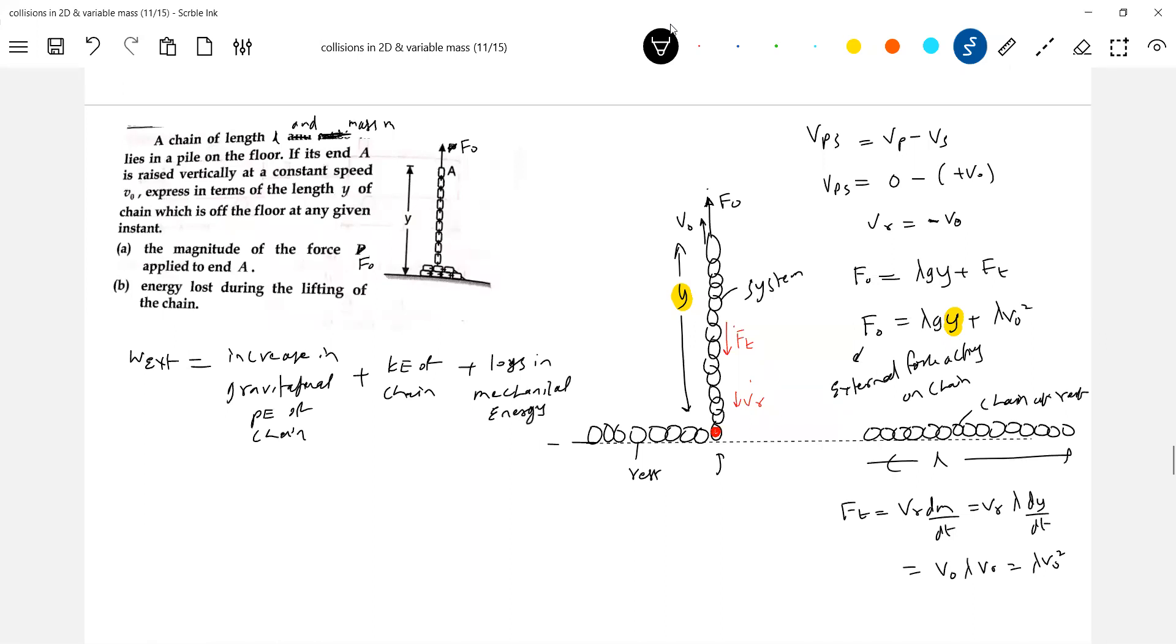What, how to calculate work done by exchange agent? So, this integral of F dy. Increase in gravitational potential energy. So, look at this. What is the mass of vertical part of chain? λy, G, y by 2.